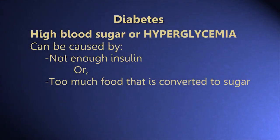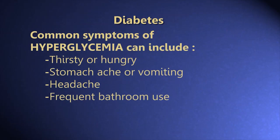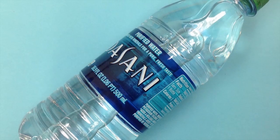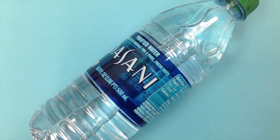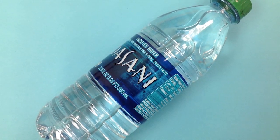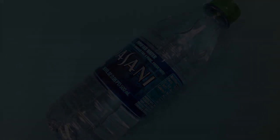High blood sugar, or hyperglycemia, is caused by not enough insulin or too much food converted to sugar. Common symptoms include feeling thirsty or hungry, stomach ache or vomiting, headache, and frequent bathroom use. To treat high blood sugar, offer the student water and follow the health care plan, which may include administering insulin — the nurse should be notified. If hyperglycemia is left untreated, a student could lapse into a diabetic coma.